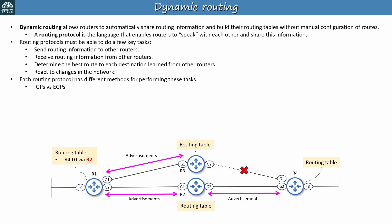For example, there are IGPs and EGPs — interior gateway protocols for sharing information within an autonomous system, and exterior gateway protocols for sharing information between autonomous systems. Each routing protocol uses a particular algorithm type for performing these tasks: distance vector algorithms, link state algorithms, and path vector algorithms. And even within each algorithm type, each individual routing protocol has its own methods for completing these tasks.